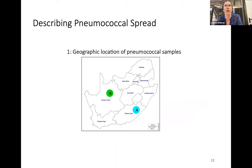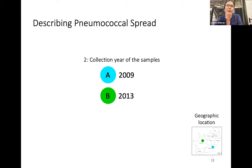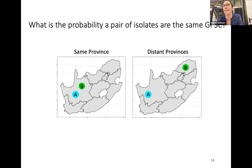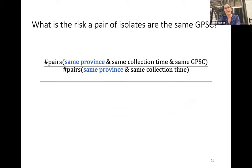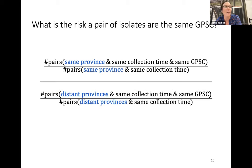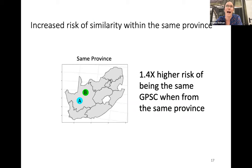To answer whether there's geographic structure, we take the geographic location of pneumococcal samples — say sample A from Eastern Cape and sample B from Northern Cape — and the collection year. We want to know the probability that a pair of isolates are the same GPSC if collected from the same province compared to distant provinces — greater than 1,000 km apart. We count pairs from the same province collected within one year of each other that are the same lineage, versus pairs from distant provinces. This gives us a relative risk. We find a 1.4 times higher risk of pairs being the same GPSC when from the same province — the qualitative differences seen on the map are real and quantifiable.